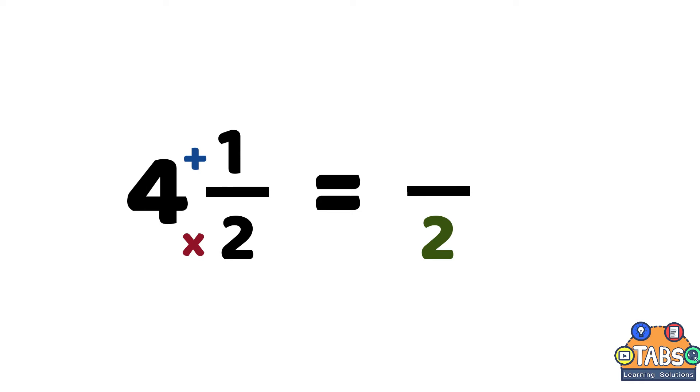Then multiply the whole number with the denominator: 4 times 2 equals 8. Then add the product of 8 to 1, which equals 9. So we have 9/2 as the improper fraction.